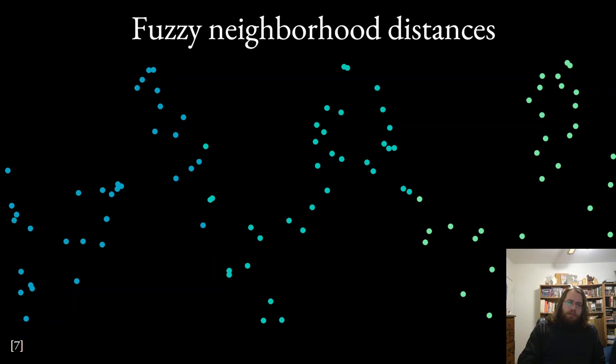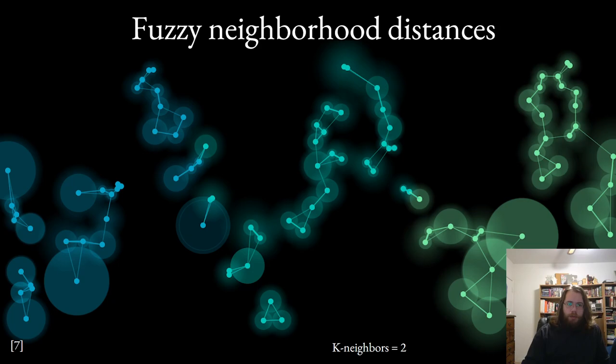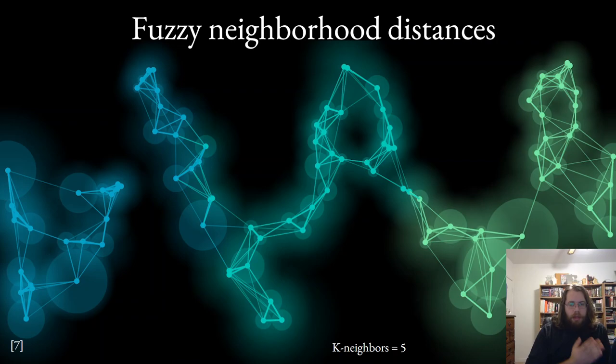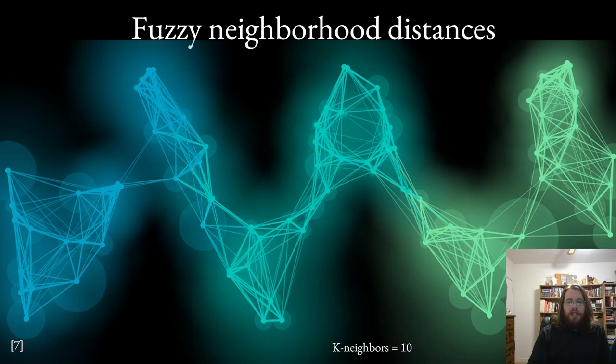Let's visualize these steps using the toy data that I showed before. So if we pick the k-neighbors parameter to be two, we get these solid and fuzzy balls at each point, and you'll notice that the radius of each data point's neighborhood ball is entirely dependent on the local structure of the data. If we crank the k-neighbors parameter up to five, we now get much wider neighborhoods. And bumping the parameter all the way up to 10 gives us even broader neighborhoods. Now that we've got a very large k-neighbors parameter choice, you'll notice that the open cover, the CESH complex, does a good job of highlighting the global structure of the data, but that's at the expense of some of the local structure.